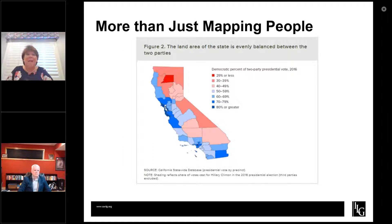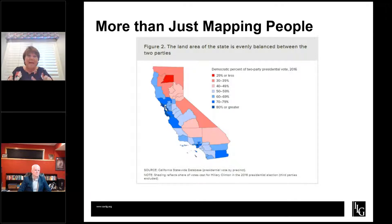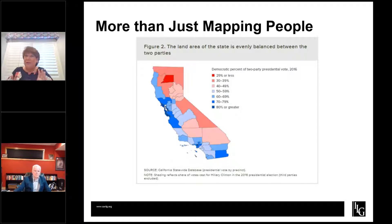Mapping is more than just mapping people. If you look at this map by county, it shows the breakdown of California in terms of party — a partisan map. We'd like to think of California as this big blue state, but if you break it down by county, it's actually about 50% Republican, 50% Democrat. So not quite the big blue state that we think.